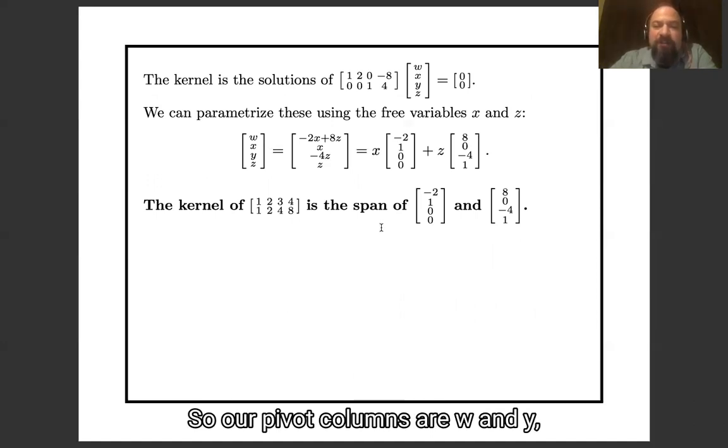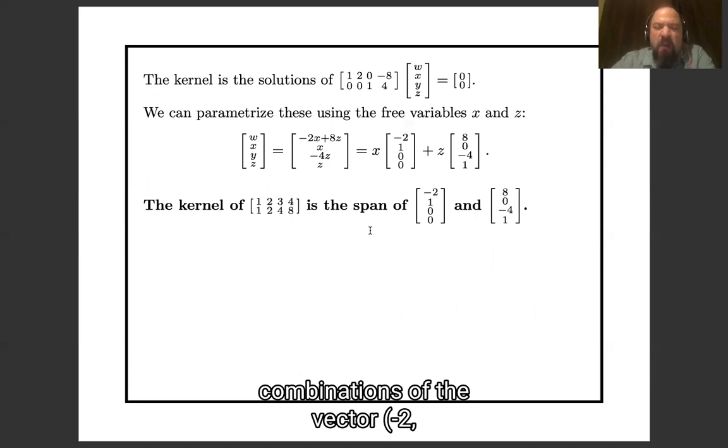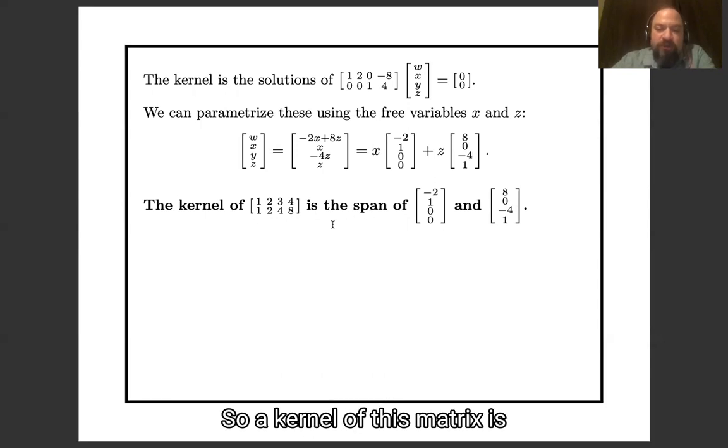And we can parameterize the solutions to these row reduced equations using the free variables. So our pivot columns are w and y, our free variables are x and z. And so we go through the by now standard routine of parametrizing solutions using free variables. And we see that the kernel of our matrix is the set of all the linear combinations of the vector negative 2, 1, 0, 0 and the vector 8, 0, negative 4, 1. So the kernel of this matrix is the span of these two vectors.